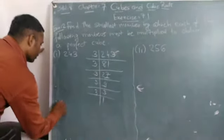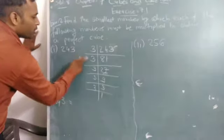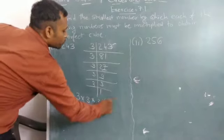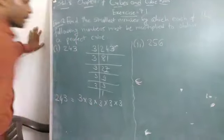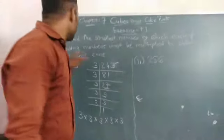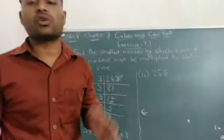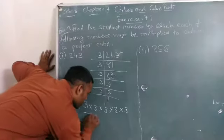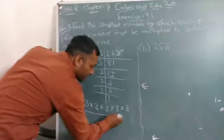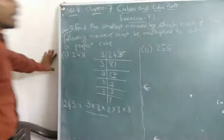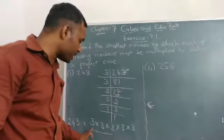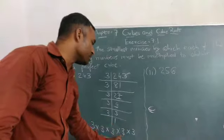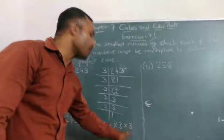So now you can write here, 243 means 3 multiplied 5 times. Now, we want to find a perfect cube, so we make it in groups of 3. First group is 1, 2, 3. And left will be 2 times. You can see here, first pair is complete, 3 times, but second pair is only 2 times.